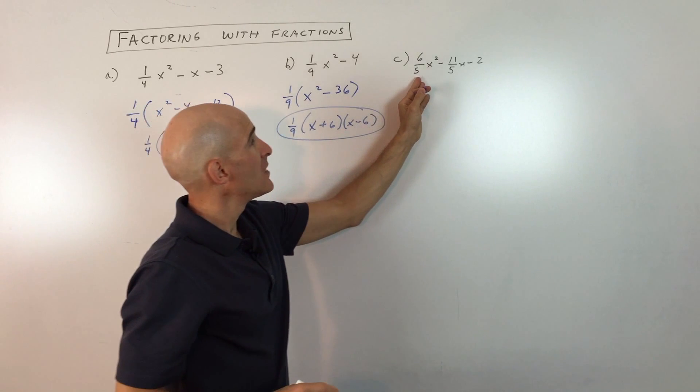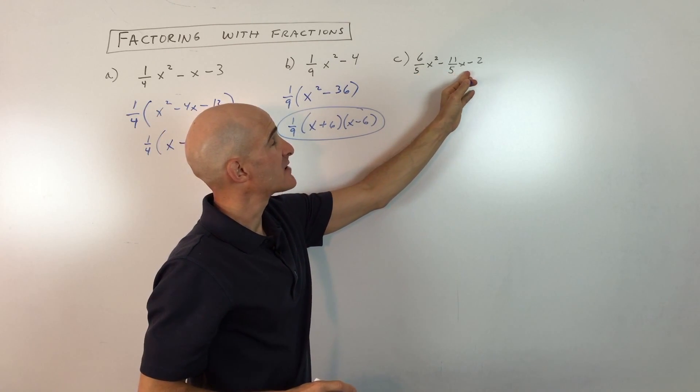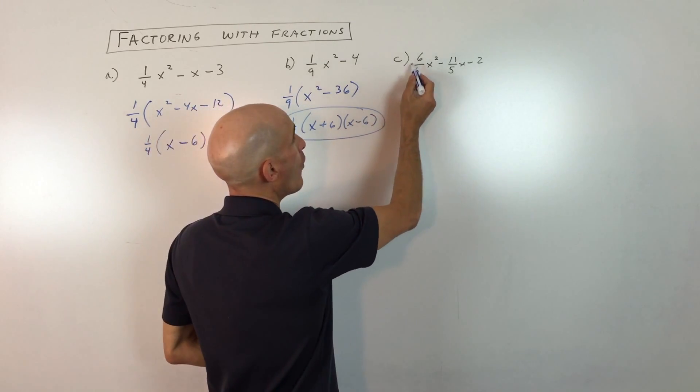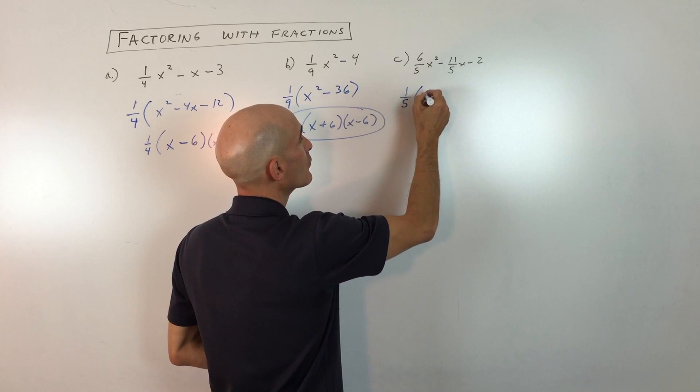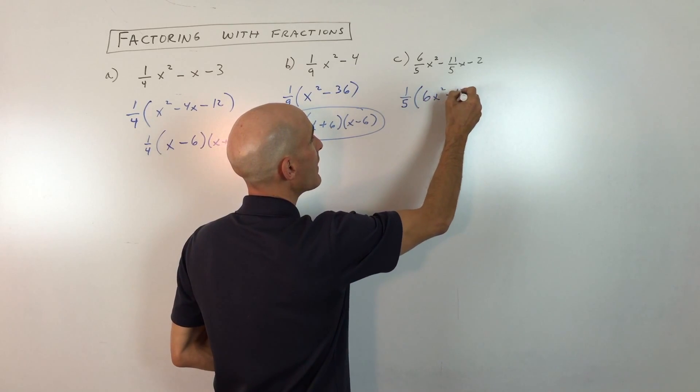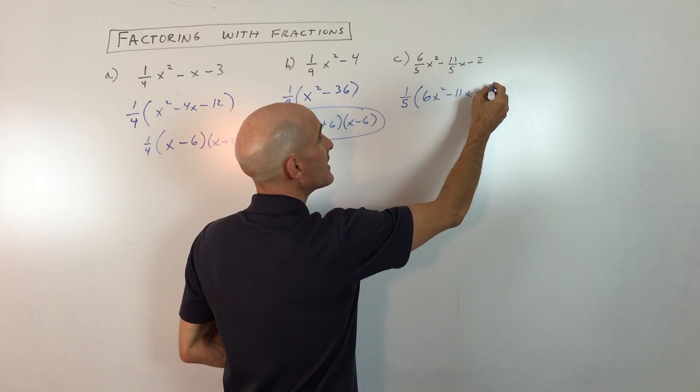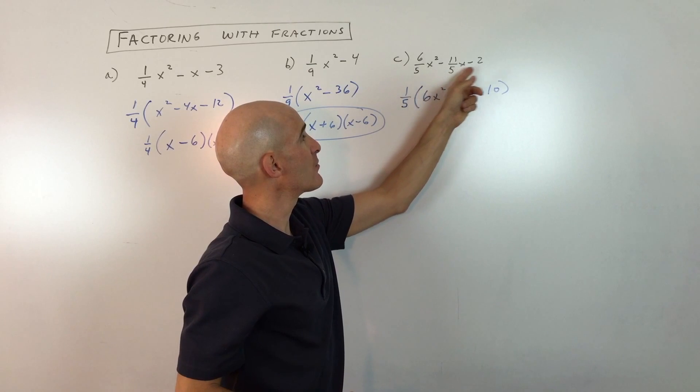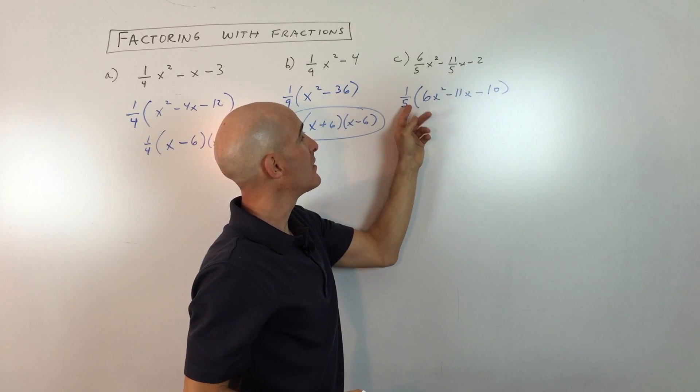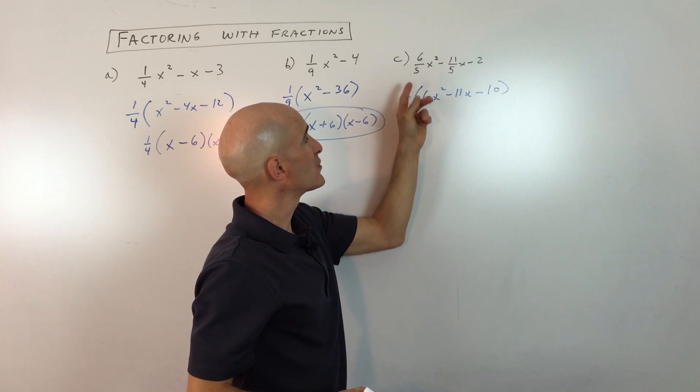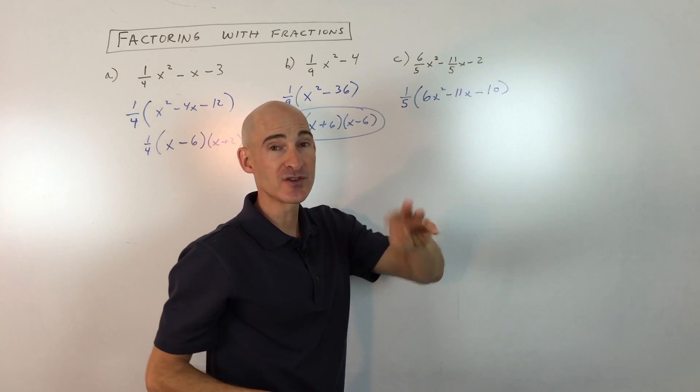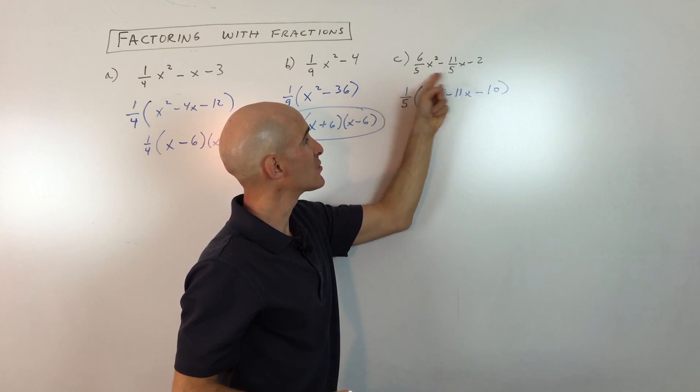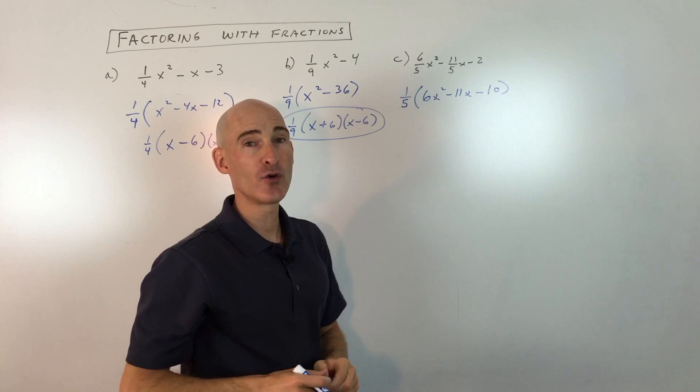And then the last one, we've got six-fifths x squared minus 11-fifths x minus two. So here what we're going to do is we're going to just factor out one-fifth. So if we pull out the one-fifth, we're left with six x squared minus 11x minus 10. A lot of times students will think they're factoring out here, but not factoring out of this last term. Again, when I factored out that one-fifth, it was really like multiplying everything by the reciprocal, which is multiplying by five. So all these have been multiplied by five. Again, if you're not convinced, go ahead and distribute, and you'll get back that original trinomial.